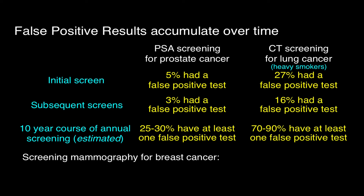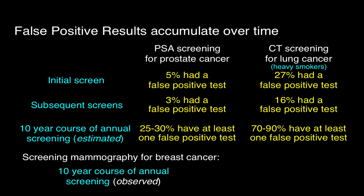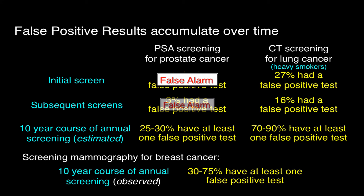For screening mammography, we don't have to estimate — mammographers have kept very careful data in seven mammography registries across the country. In a 10-year course of annual screening, the observed rate is somewhere between 30 to 75% of women will have at least one false positive test result. The 30% low end represents women at low risk because their breasts are not dense and because their mammographers have a high threshold to call mammograms abnormal. The 75% represents women with dense breasts whose mammograms are read by mammographers with a low threshold to call them abnormal.